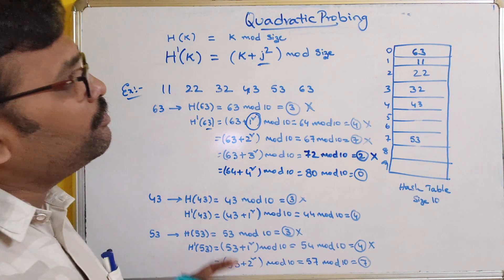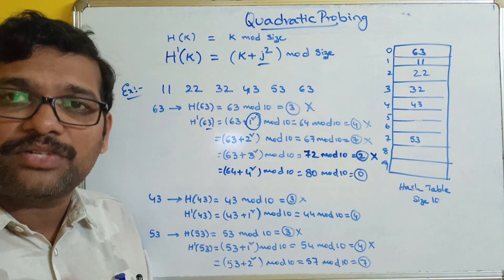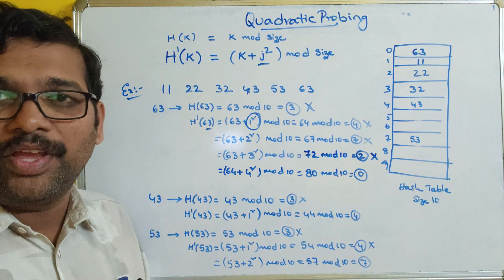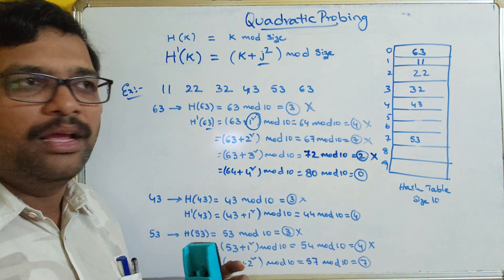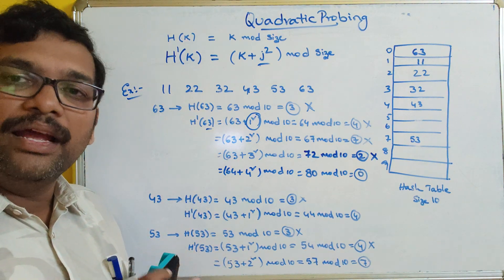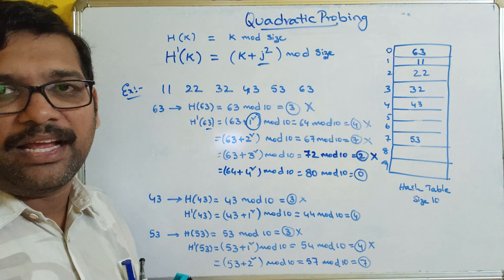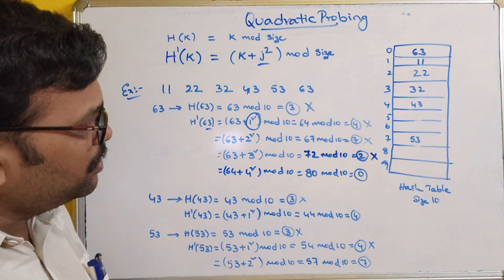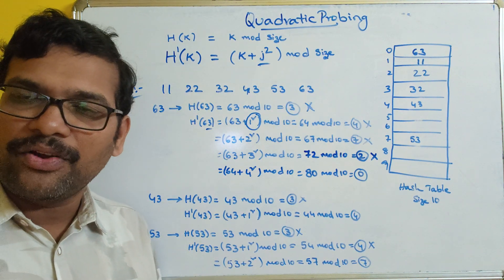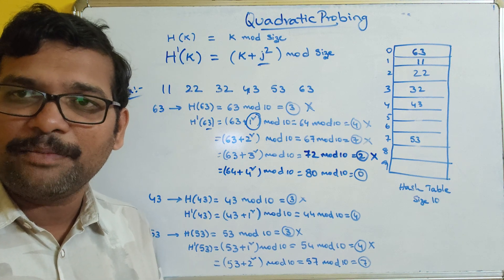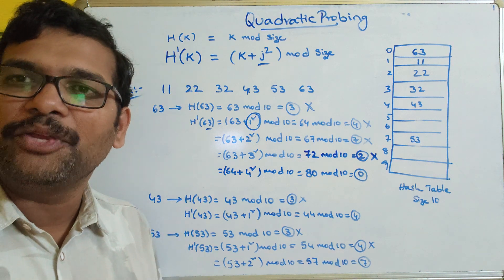This is how quadratic probing is implemented. In our next session we will go with the next one — double hashing. So we have seen separate chaining and open addressing: linear probing, quadratic probing, and then we will see double hashing. If you have any doubts, feel free to post in the comment section. If you enjoyed the session, like, share, and subscribe. Thanks for watching.